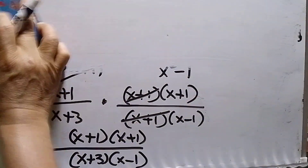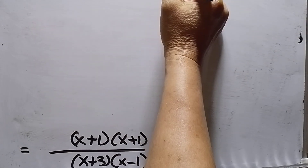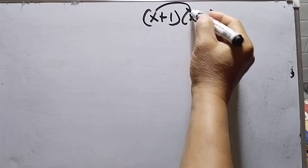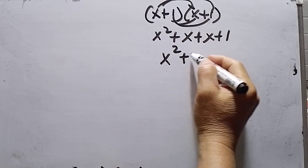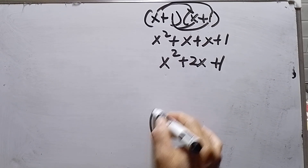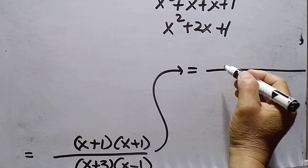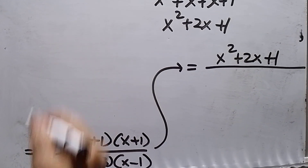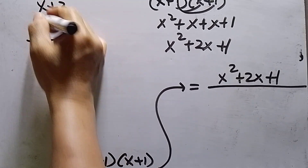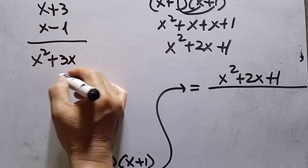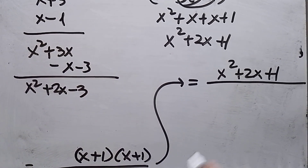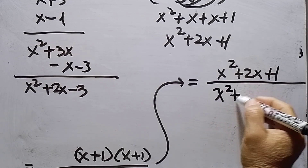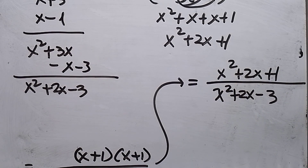My final answer for number 4: multiply the numerator factors (x + 1)(x + 1) = x² + 2x + 1. For the denominator, multiply (x + 3)(x - 1): x² + 3x - x - 3 = x² + 2x - 3. So the answer for number 4 is (x² + 2x + 1) over (x² + 2x - 3). Now let's proceed to number 5, which will be the last number.